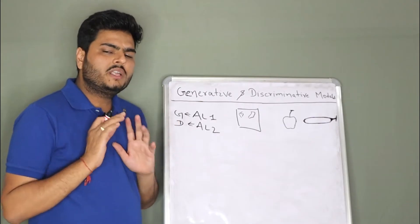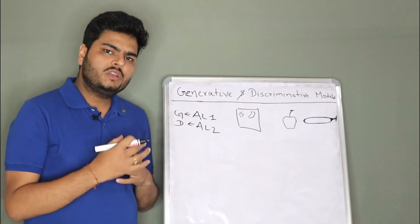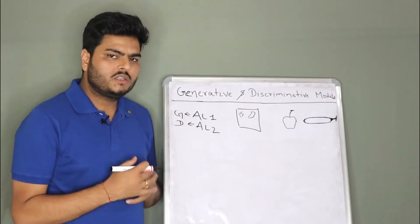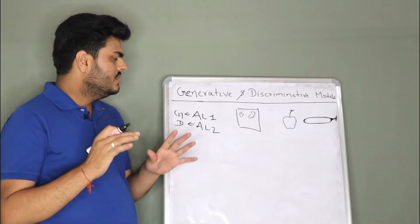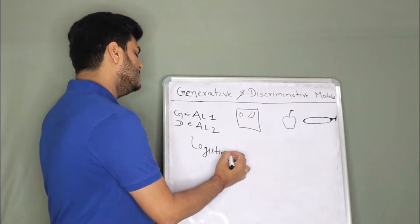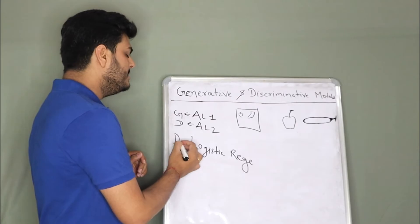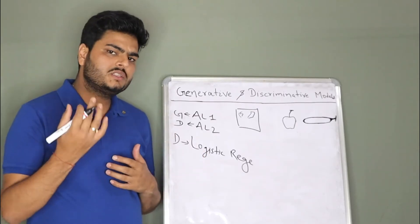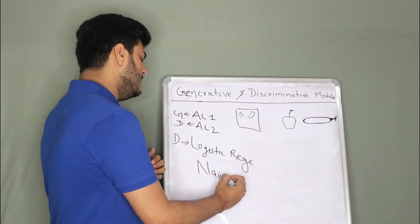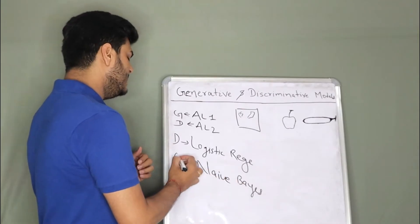Let us start the discussion with all the details of generative and discriminative classification in this video. I will take two algorithms and make you understand what is generative classification and what is discriminative classification. Let's say there is one algorithm called logistic regression. This is an example of discriminative classification. And there is another example known as Naive Bayes. This is an example of generative classification.